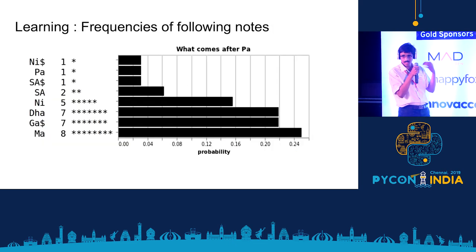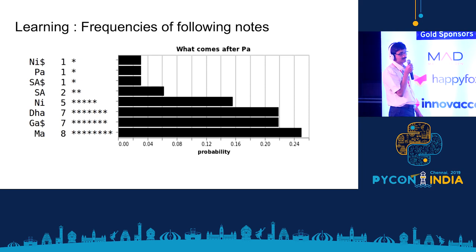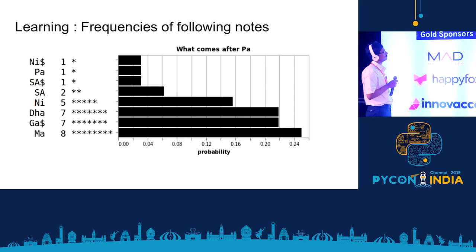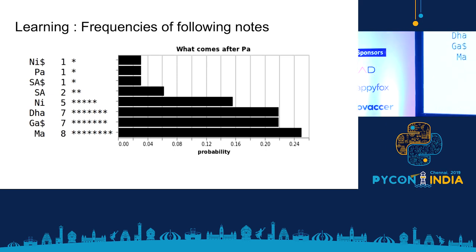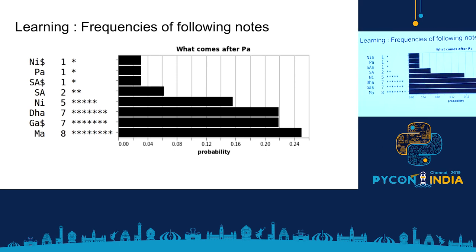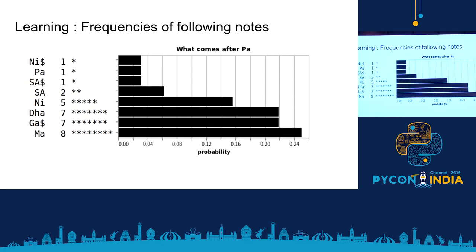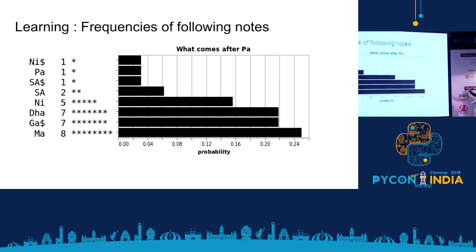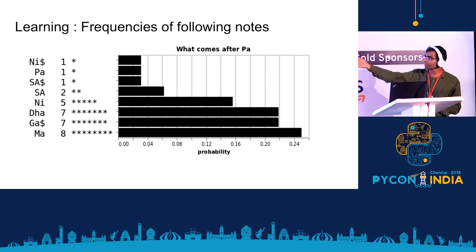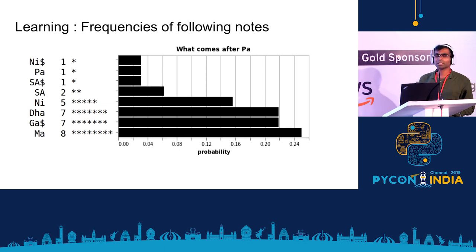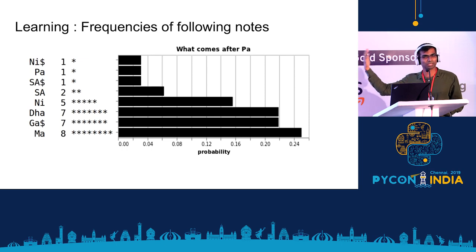Vikrant will now explain the implementation. Given an input sequence of known compositions fed to our bot, for every note it computes a histogram. For example, after the note Pa — in the input known composition — it counts all the notes that come after Pa. Ma is coming the highest number of times, 8 times. From this histogram we compute probabilities, and this is how we construct the probability matrix. We will have a probability for every note that comes into that raga.